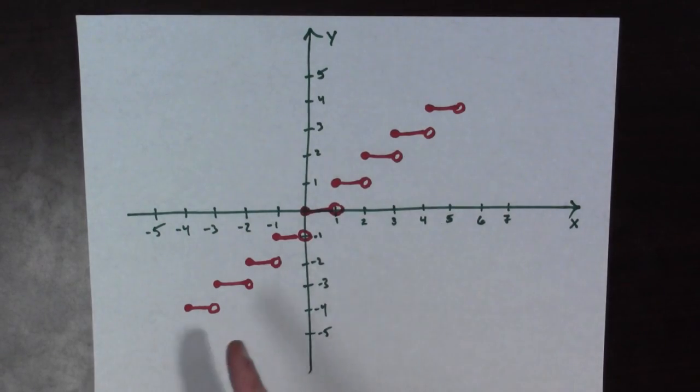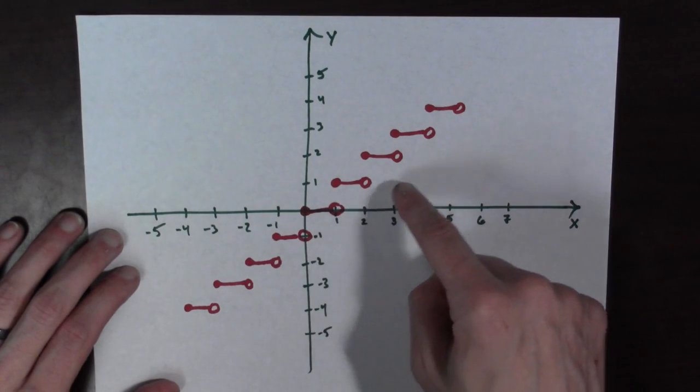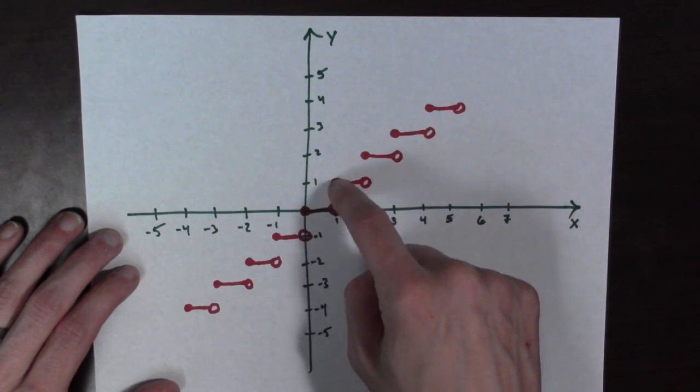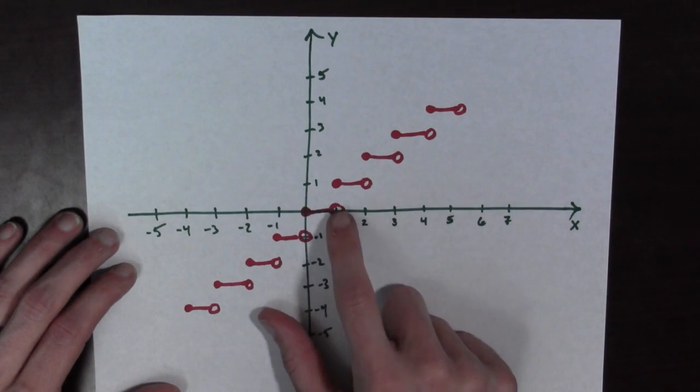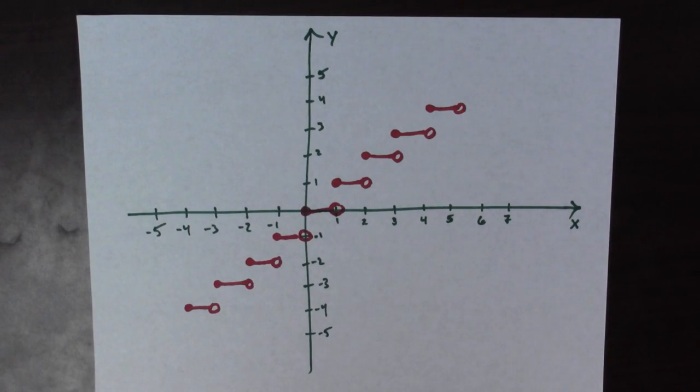And here is the plot of the Greatest Integer function. It's a little different than many of the plots you're looking for. It's not continuous. There's little jumps here and there. We've got these funny filled-in circles and not filled-in circles, but this one just means that the function's not here, it's up there. So, this is what the function looks like when you plot it.